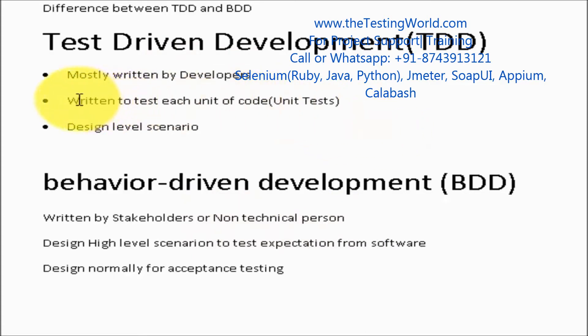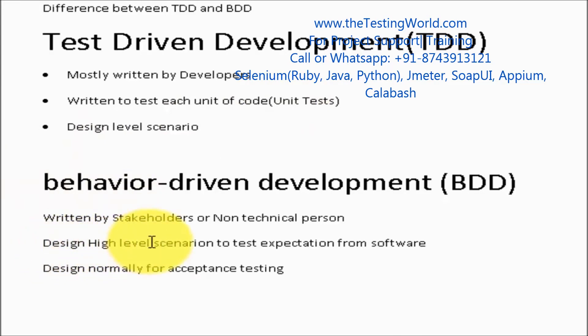In TDD, test cases are written to test each unit of code, meaning we are writing test cases for each function and each class — so we are working at the unit level. But in BDD, we are writing high-level scenarios; we are writing our expectations from the application as a whole, not from individual methods or classes.